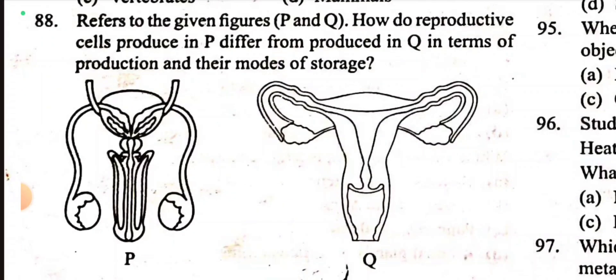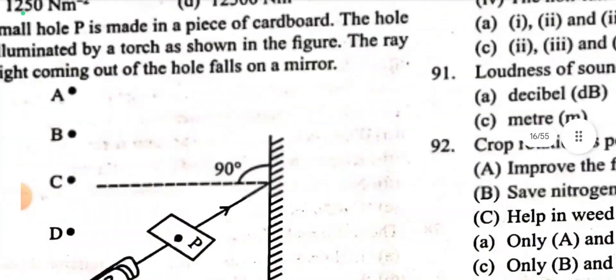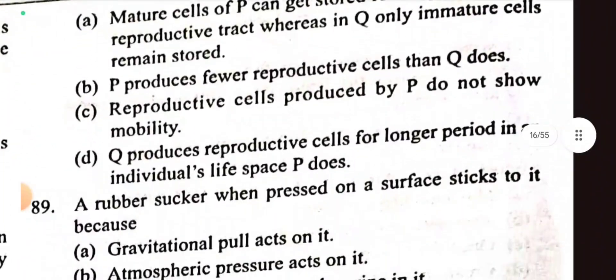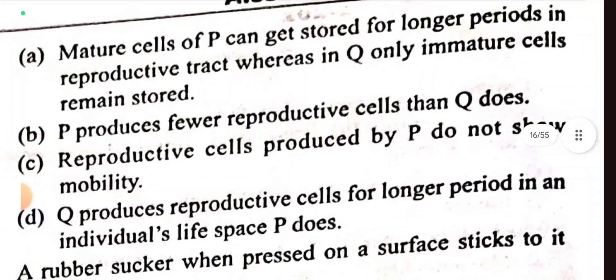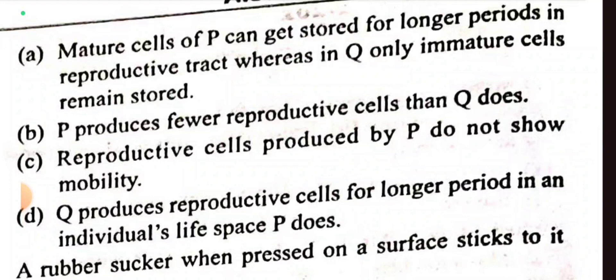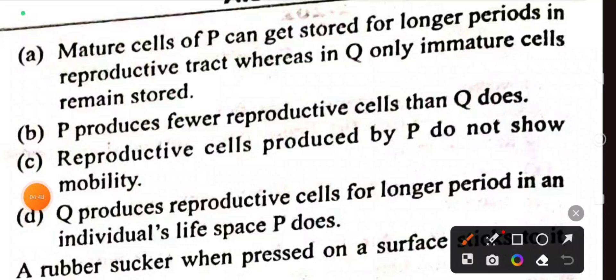Question 88: P is male reproductive organ, Q is female reproductive organ. What is the difference between P and Q? Option A: Mature cells of P can be stored for longer periods in the reproductive tract, whereas in Q only immature cells remain stored. Yes.